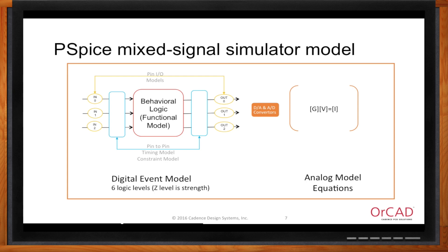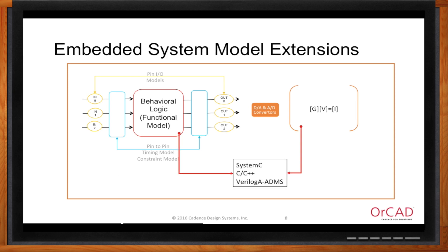If you're dealing with an embedded system with software and so forth, how does that model extend to handle that? If you look at our event solver, it has a PCB orientation to it. It has basically three different components: behavioral logic, pin-to-pin and constraint models, and I/O models. What we do is extend that with SystemC. And similarly for our analog partition, we extend it with different modeling languages. Having these modeling languages allows the models embedded in each of the blocks to be accelerated by taking a higher level of abstraction in terms of modeling a chip.